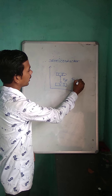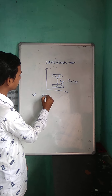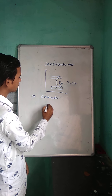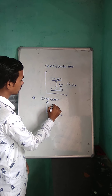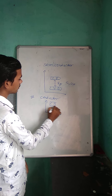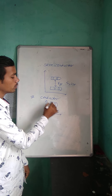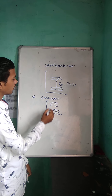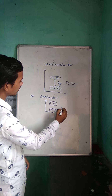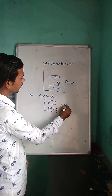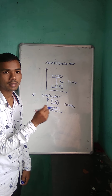Silicon and germanium are the best examples of semiconductor. Our next topic is conductor. In case of conductor, electron is easily moved from valence band to conduction band — they overlap each other. Copper is the best example of conductor. In case of conductor, electricity is strong.